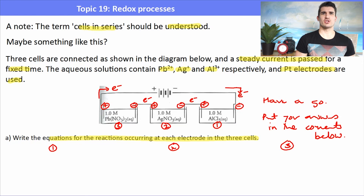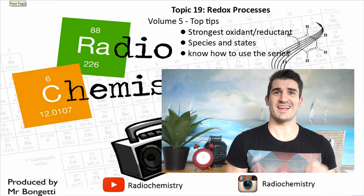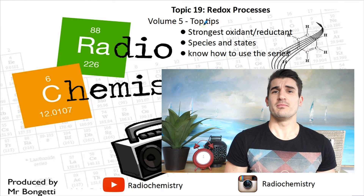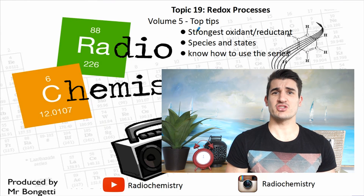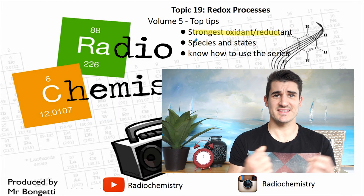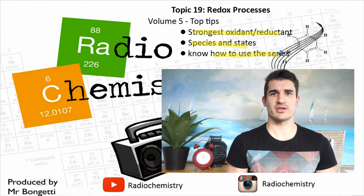Volume 5 top tips: always refer to species in questions as the strongest oxidant and strongest reductant. When asked to identify a product, include the species and its state, and make sure you know how to use the electrochemical series. Thanks for watching — drop a like, subscribe for more, and I'll see you next time.